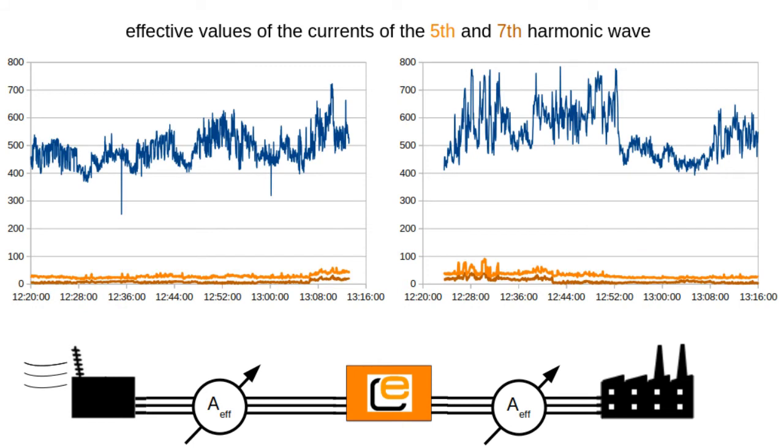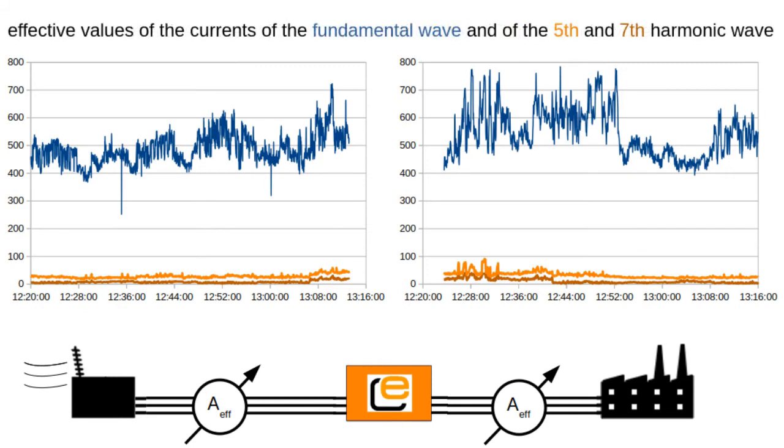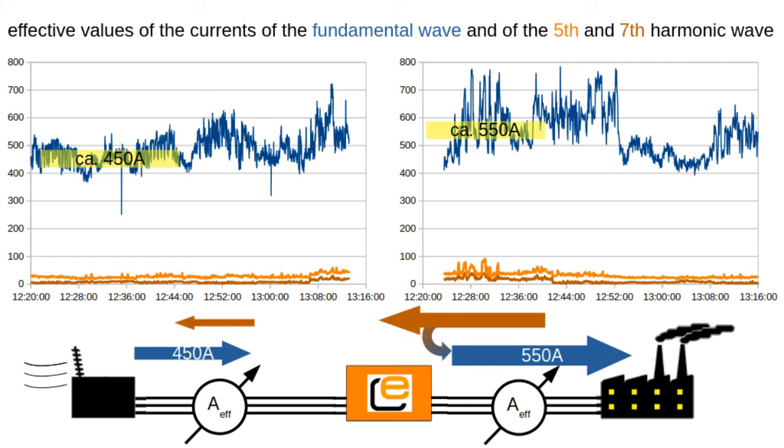Let's have a closer look at the fundamental wave, here shown in blue. In the first time range when the harmonics come from the factory side, we have a larger current on the factory side than on the grid side. On the grid side about 450A effectively flow, and on the factory side about 550A flow, so about 100A more. A small fraction of the extra current is achieved by lowering the voltage, but the main part comes from recuperating the energy from the harmonics. And this recuperation is exactly what saves you the electric power, carbon dioxide and money.